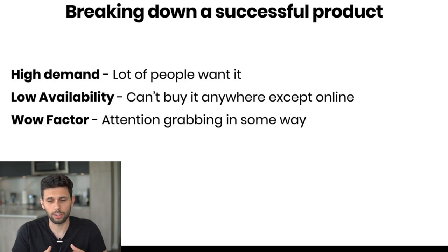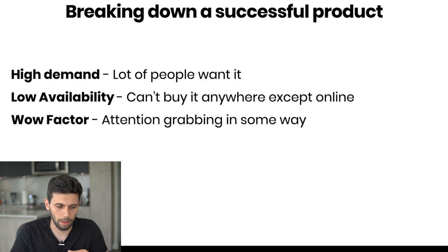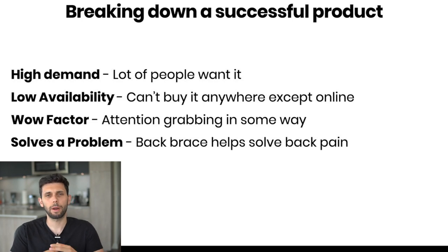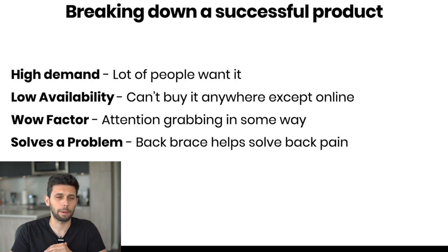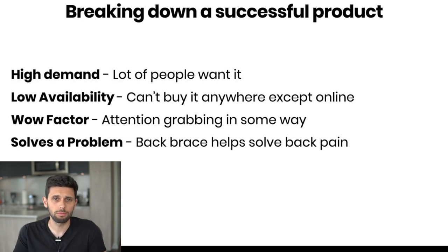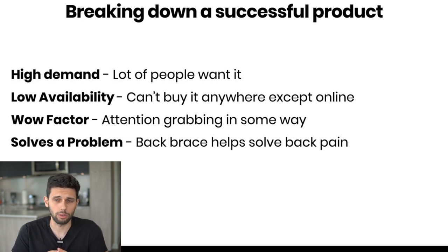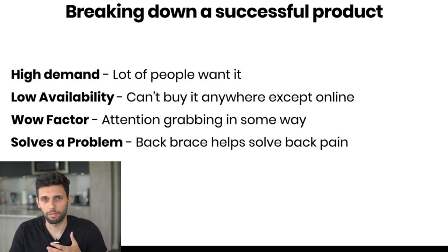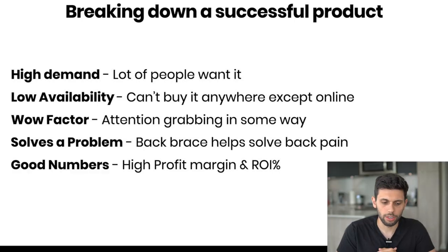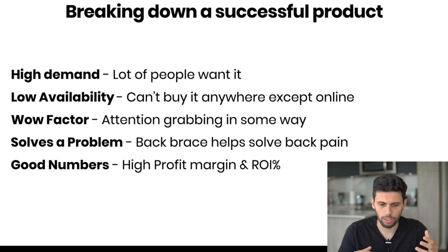There are always caveats — there's going to be a screw that makes $100,000 a month because someone reinvented it — but as a general rule of thumb. A really important one: a product that solves a problem. If your product has no real purpose, it's not going to be good. A back brace helps solve back pain — if someone has back pain, they're going to need a product to solve it. Whereas a couch pillow is a lot more difficult to sell and people just go for the cheapest option. Finally: good numbers — high profit margin and high ROI.